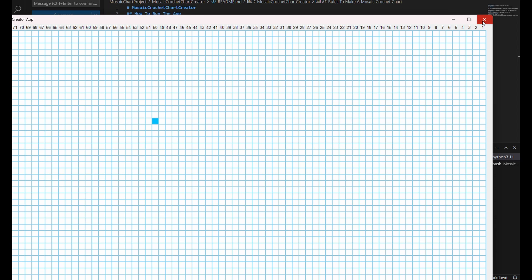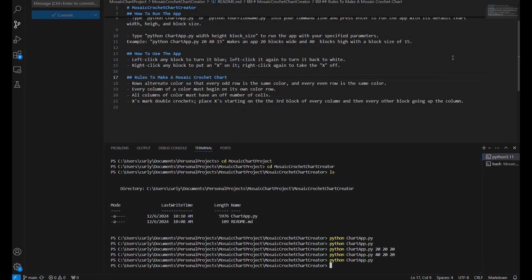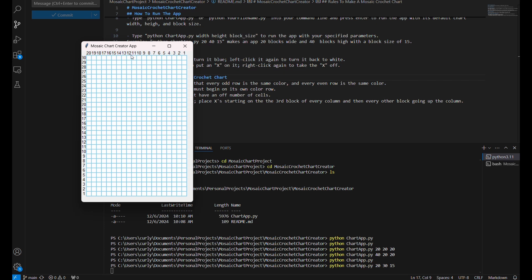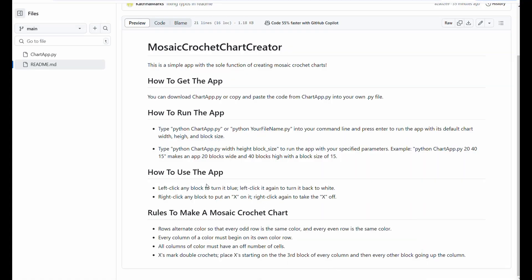I basically made the default take up my whole computer screen because I like space, but we can also run the app by changing the first number will be the width. The next number will be the height. And then the next number will be the block size. So you can see the blocks got smaller here. So just remember width, height, block size, and that's all in the readme here with an example.